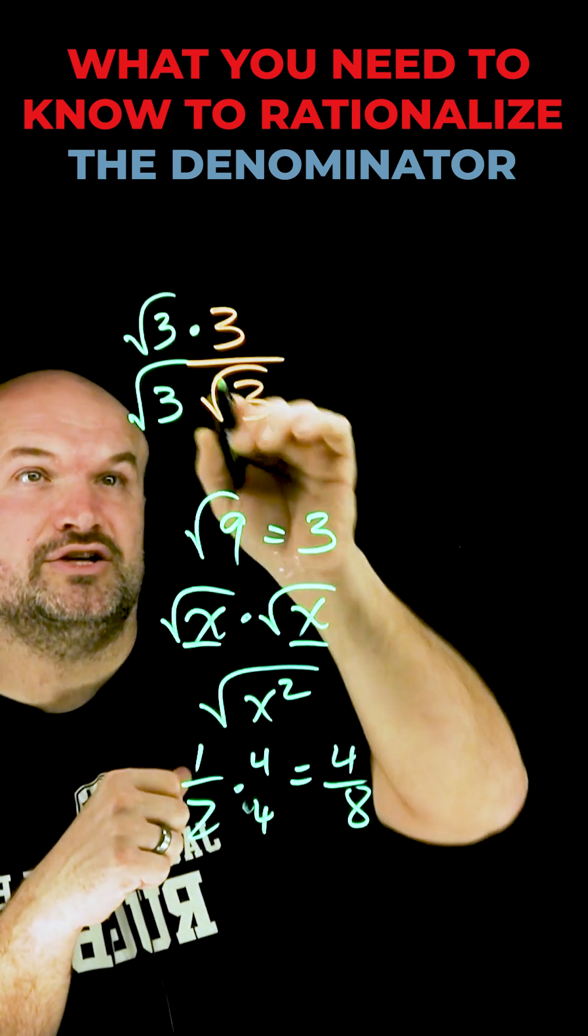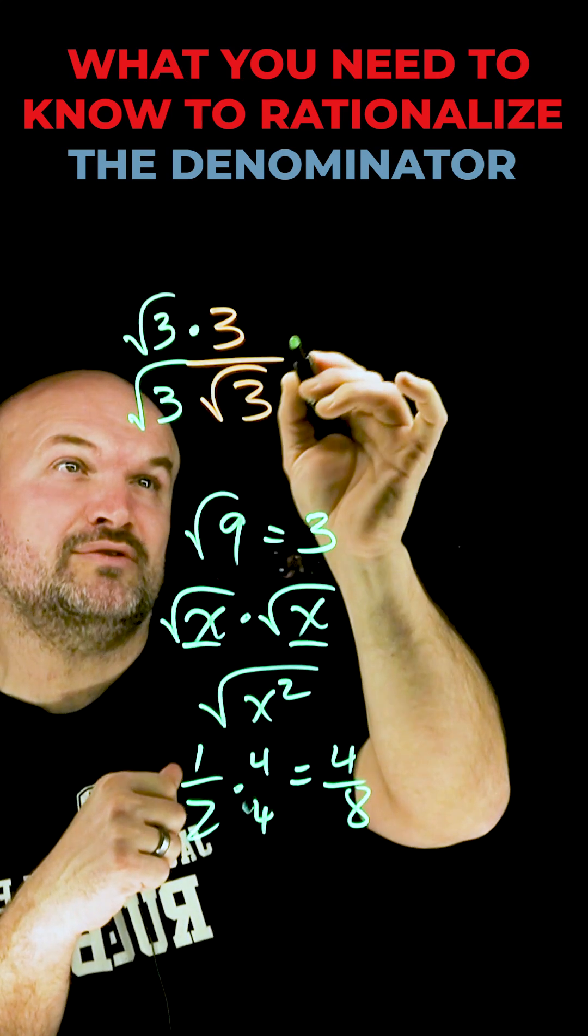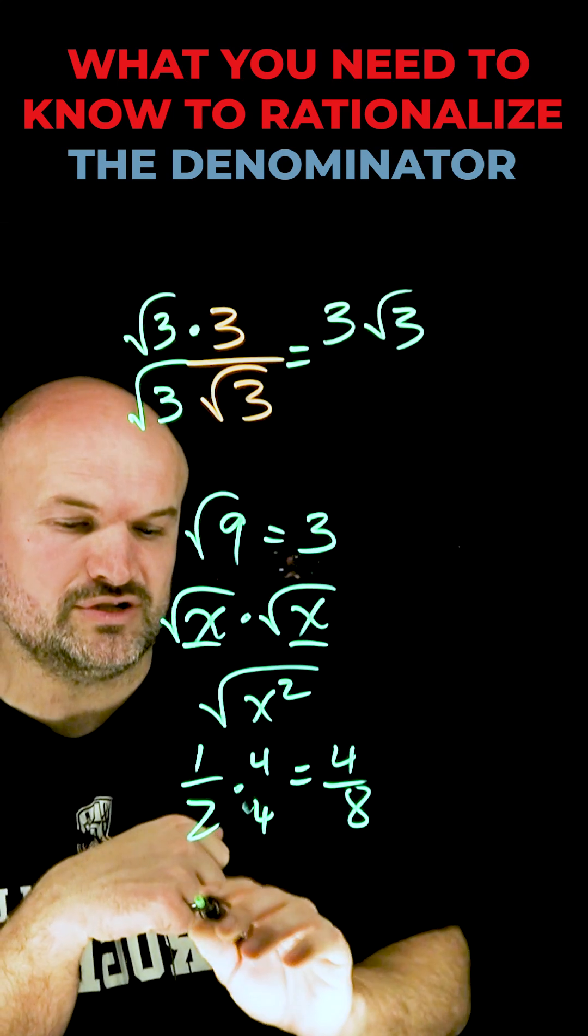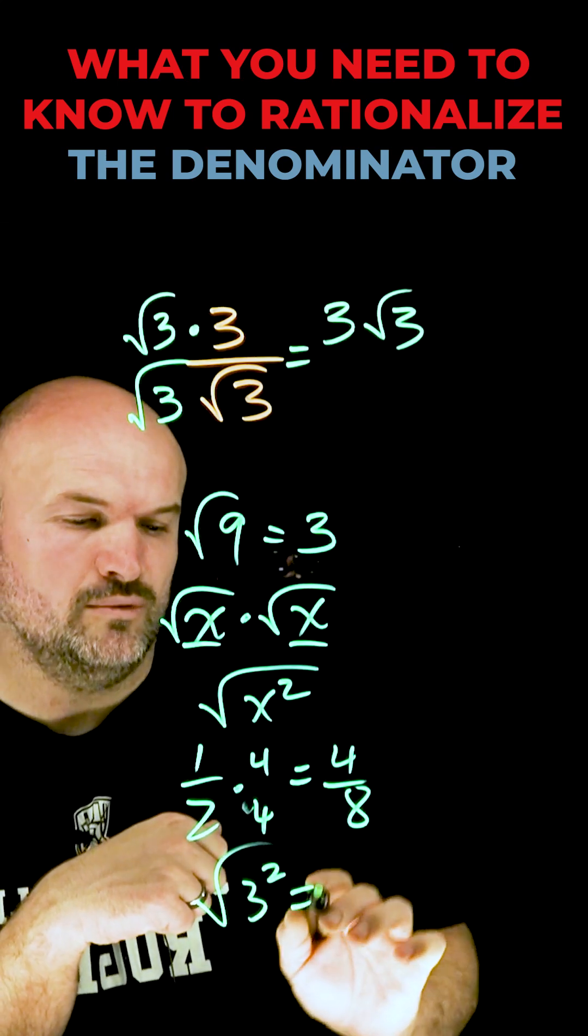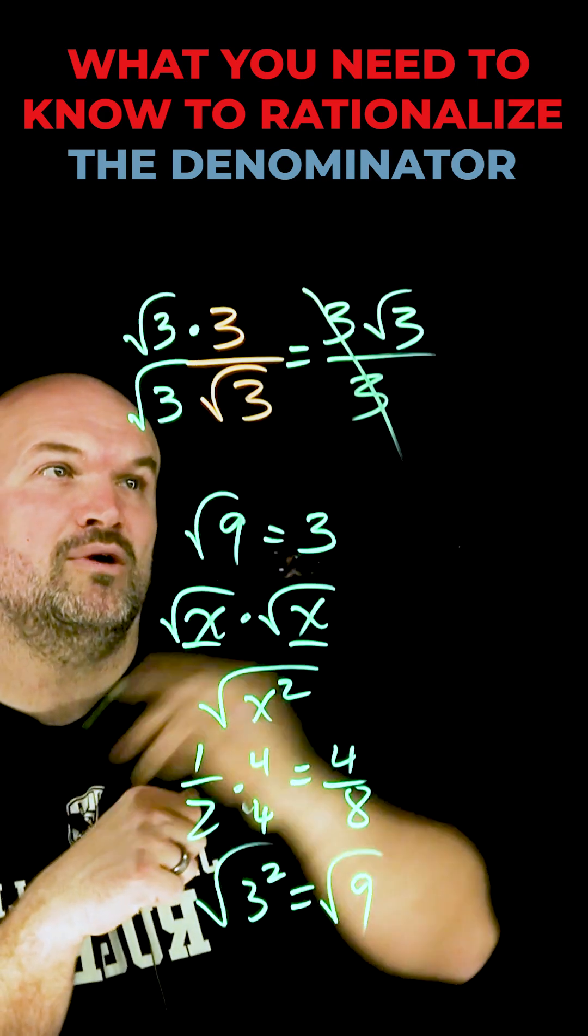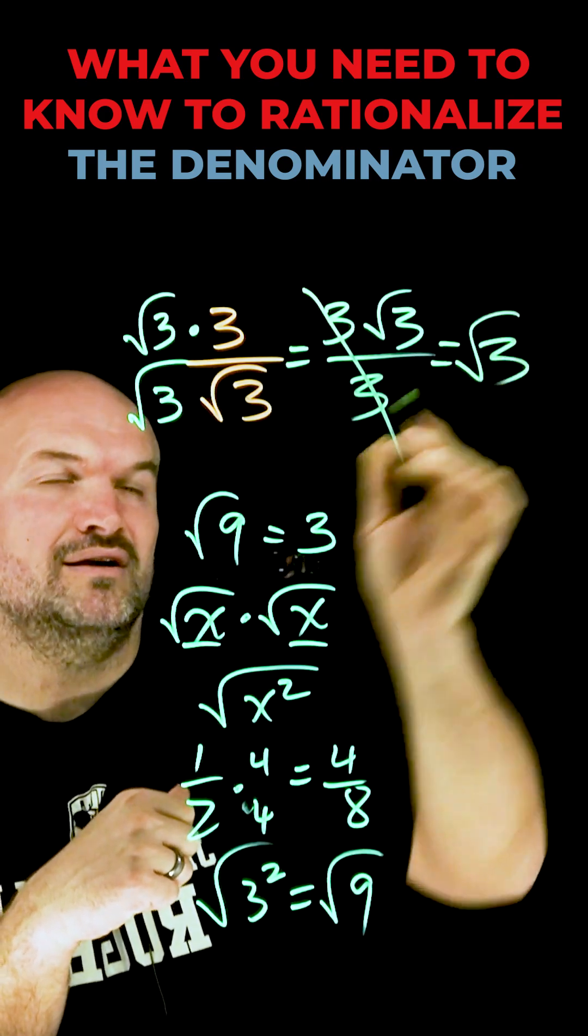Now all I simply need to do is, I can't do anything with the 3 square root of 3, so that's going to be 3 square root of 3. And then here I have square root of 3 times 3, which is the square root of 3 squared, which is the square root of 9, which is now going to be 3, which I can simplify one more time, giving me a final answer of square root of 3.